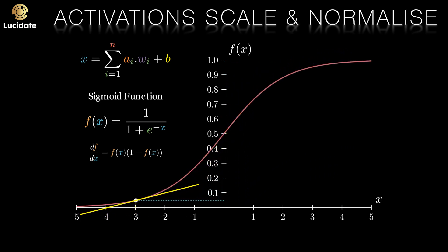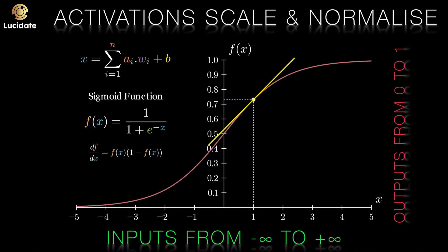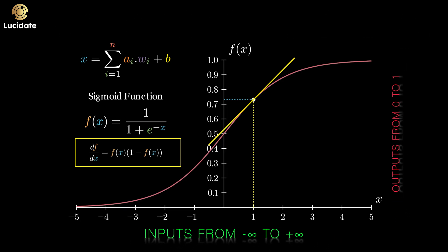Here is the sigmoid function that we saw in the last post. This squashes and normalizes all the input data from minus infinity to plus infinity into an output range of zero to one. As you can see, it also has a simple derivative which helps a lot in training. Again, more on that in post four and five.